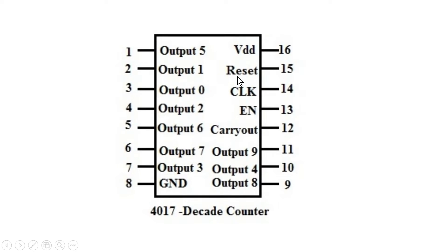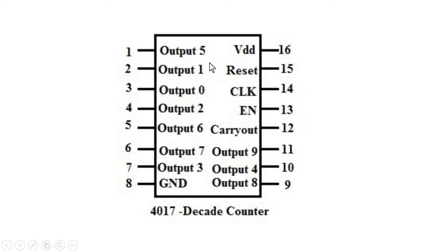It has one very important signal called the reset signal — this is an active-high reset signal. When it goes high, it will reset the entire chip, meaning it will make output 0 high and all other output signals 0. There is also an enable signal, which we keep high during the entire operation. And there is the input clock signal, where we provide the input clock frequency. Using IC4017, we will divide that clock frequency.